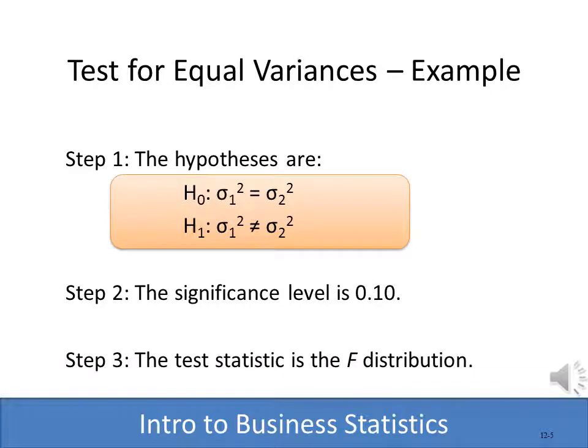Here are the first three steps of hypothesis testing. The null hypothesis is that there is no difference in the variance between route one and route two. The alternate hypothesis is that there is a difference. The significance level is 0.10, and we're going to use the F statistic because we're comparing the variance, not the mean.